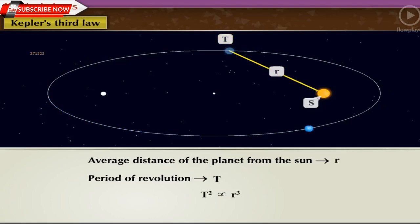That is, T square upon R cube is equal to the constant which is equal to K. This is equation 1.